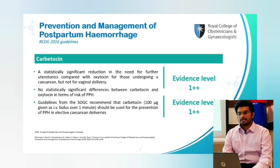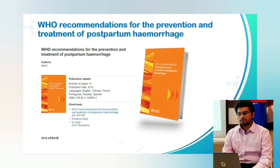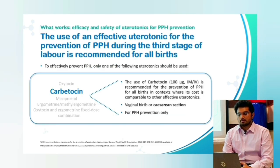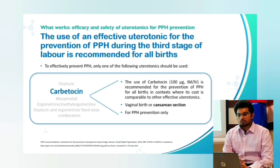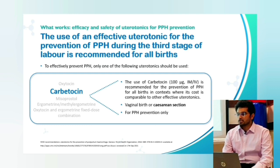The WHO 2018 update on prevention and treatment of postpartum hemorrhage recommends the use of effective uterotonic drugs during the third stage of labor for all births, irrespective of whether it is vaginal delivery or caesarean section. Various drugs are available: oxytocin, the new drug carbutocin, misoprostol, ergometrine or methyl ergometrine, and oxytocin-ergometrine fixed drug combination like syntometrine. The use of carbutocin at 100 micrograms IV or IM is recommended for the prevention of PPH for all births where cost is comparable to other effective uterotonic drugs.